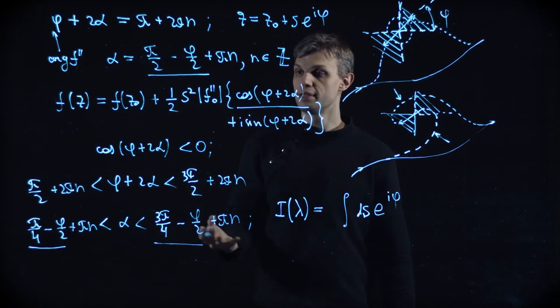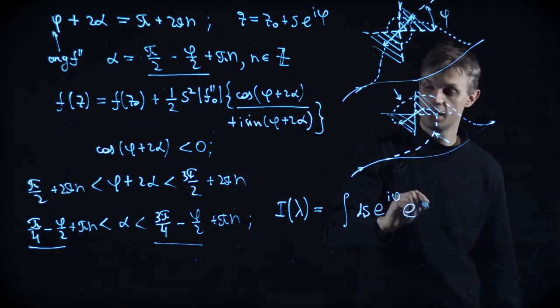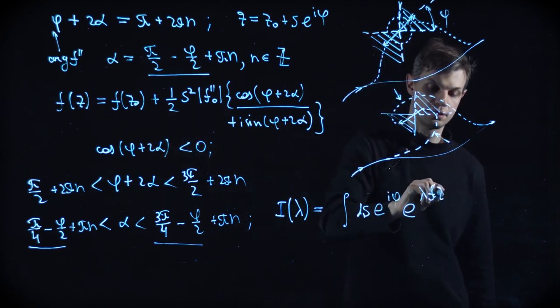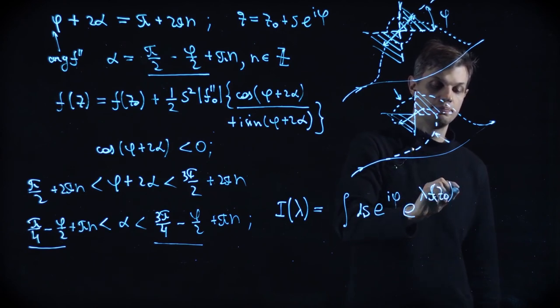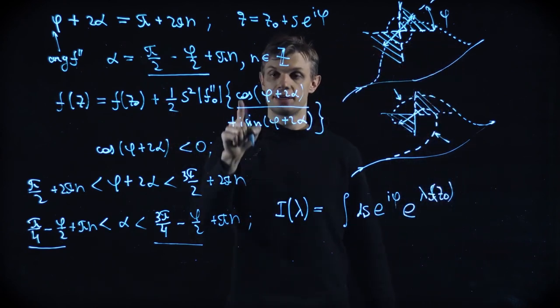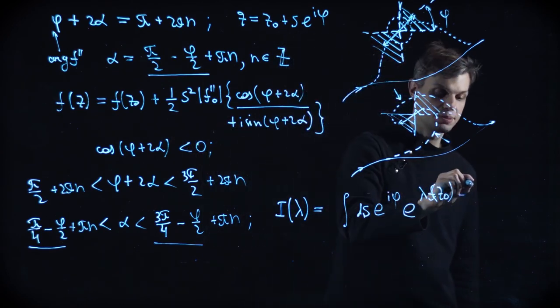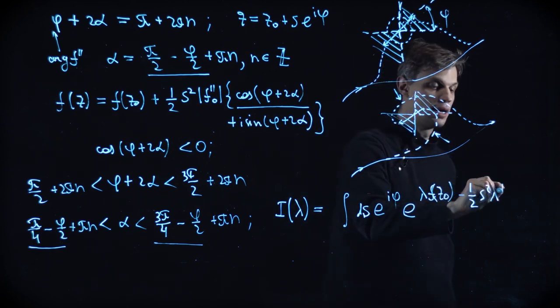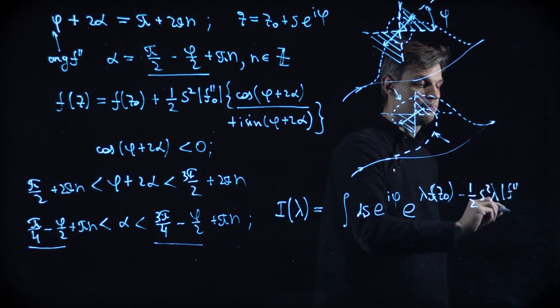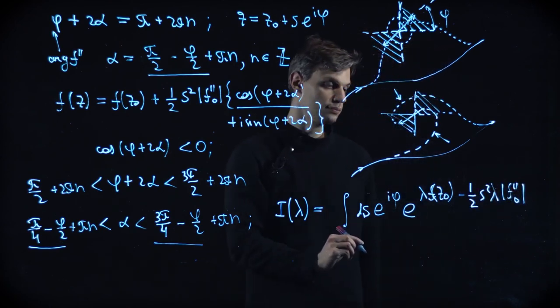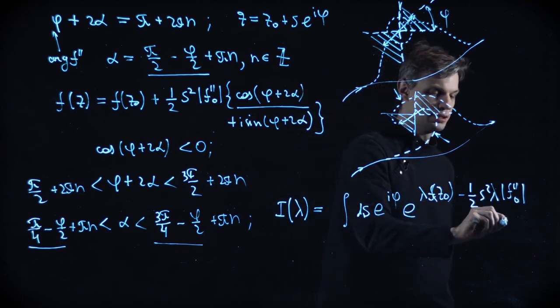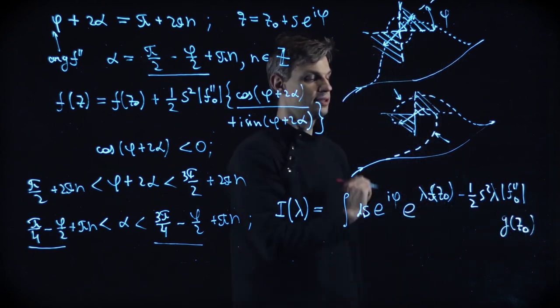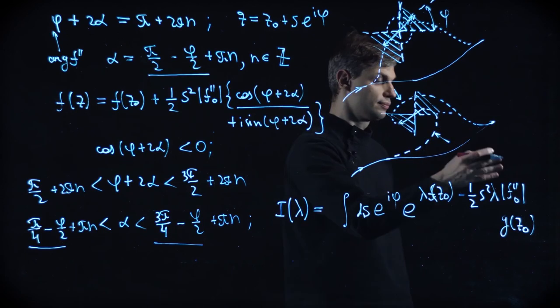And the remaining integral is simply Gaussian because it's e to lambda f of z0 plus this small addition. But the cosine is negative one. So we have just simple expression like minus one half s squared lambda f prime prime 0. And as you remember, always there is an additional function g of z, which we approximate by its value at this z0 point. And here you go. We just can take this integral.